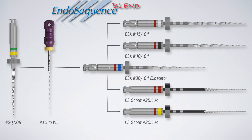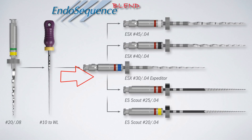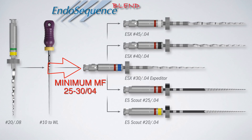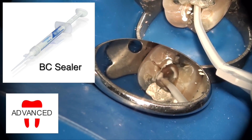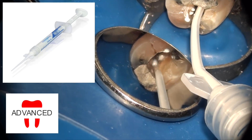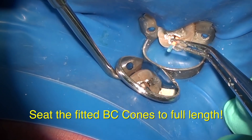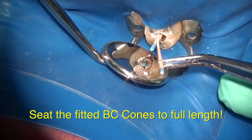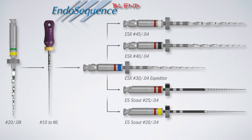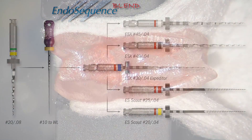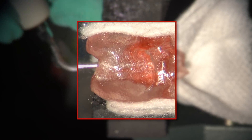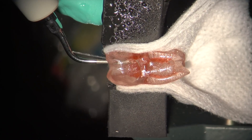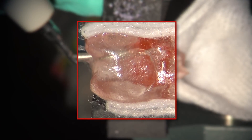Once the first file reaches the apex, instrumentation continues back up in size. The minimum finish size is typically around the size of the expediter, approximately a size 30 .04 file. The appropriate size cone is then matched and the canal is obturated — that is your master file. I'll share more videos explaining this technique, but first I want to demonstrate the blend technique and protocol in the mesial buccal root of a mandibular molar — a clear tooth — for your evaluation.